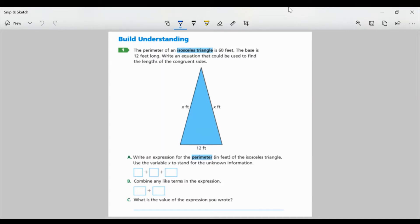The perimeter of an isosceles triangle is 60 feet. The base is 12 feet long. Write an equation that could be used to find the length of the congruent sides. Part A, write an expression for the perimeter in feet of the isosceles triangle. Use the variable X to stand for the unknown information.